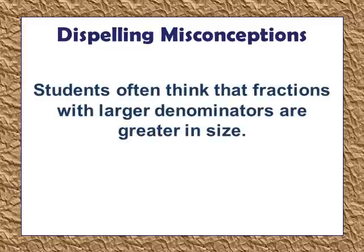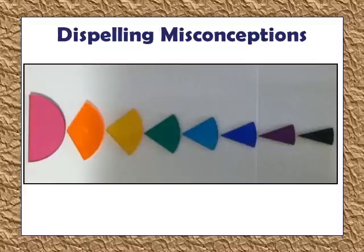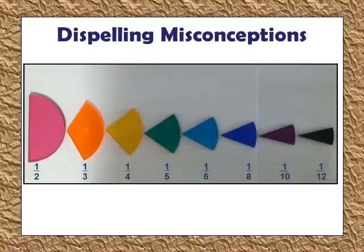Students often think that fractions with larger denominators are bigger in size. To dispel this misconception, have students take one piece of each circle model and order the pieces from largest to smallest. Then have them label the pieces using fractions — just the third-grade fractions, not fifths, tenths, or twelfths. Students will notice the denominators get bigger but the pieces get smaller, leading to the conversation: why? Because it takes twelve of those little pieces to build a whole, but only two of the big pieces.